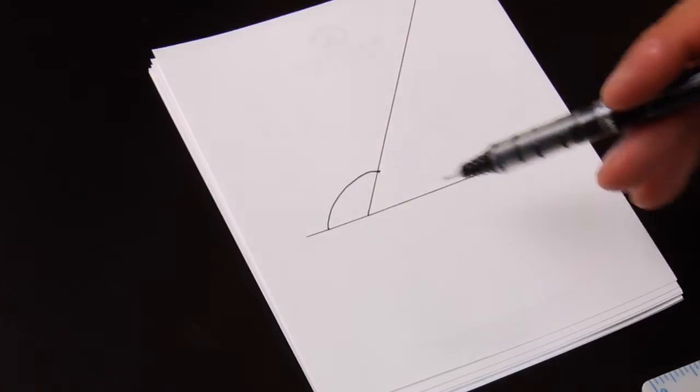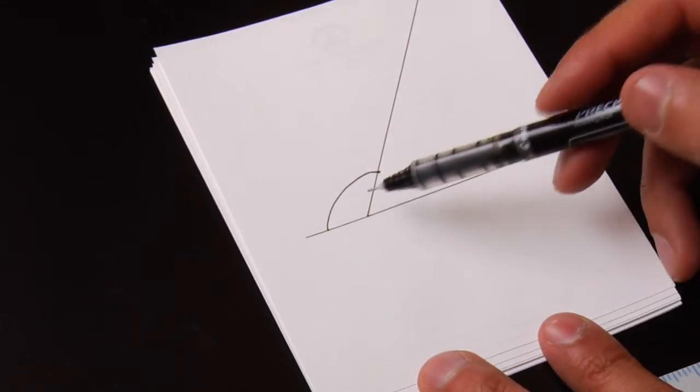So here we have a line, a straight line with another line going across and we're trying to find the angle of this measure here.